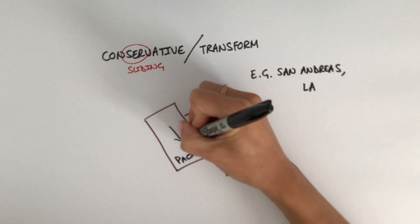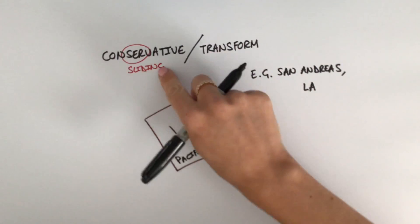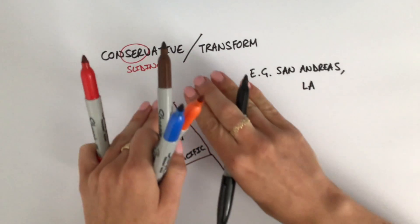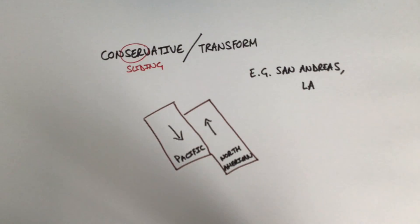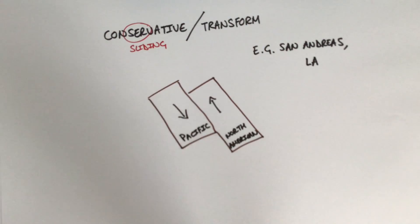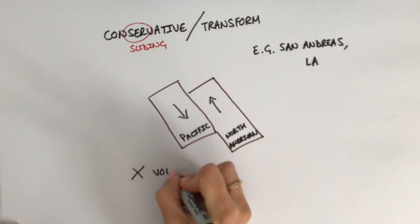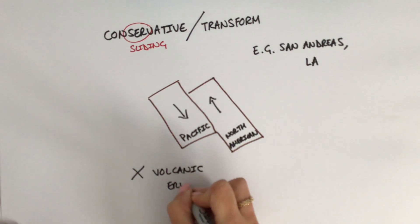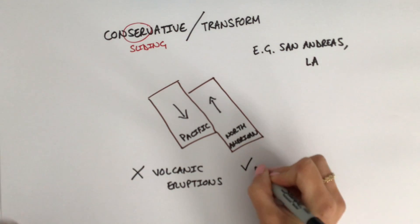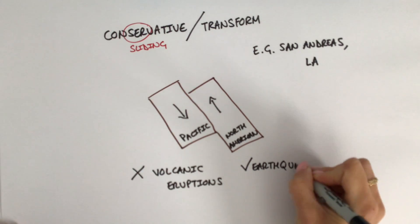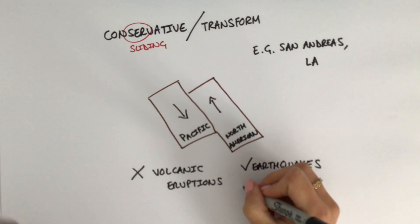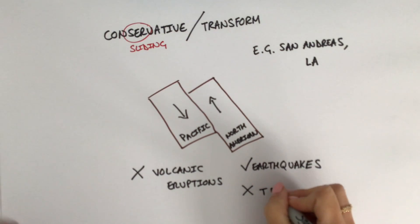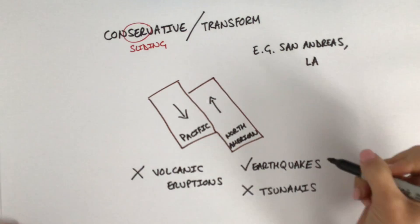At a conservative or transform plate boundary, the plates are moving in opposite directions — or they can move in the same direction but one moves faster than the other. In this case they are sliding past each other, which creates friction and potentially a tectonic hazard. At this particular plate boundary, we are not going to get volcanic eruptions typically. Instead we get earthquakes — some really high-risk, high-energy major earthquakes — which is why the San Andreas fault line is very famous. Tsunamis are not typical here either, so this boundary tends to produce only earthquakes.